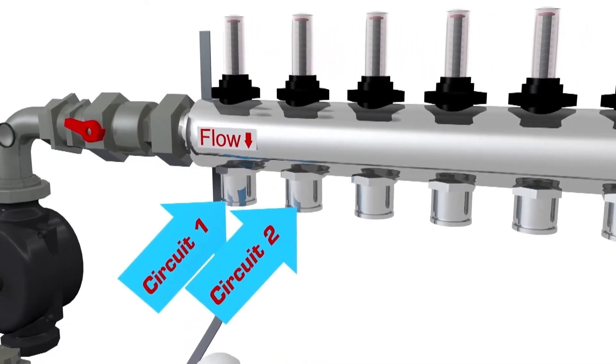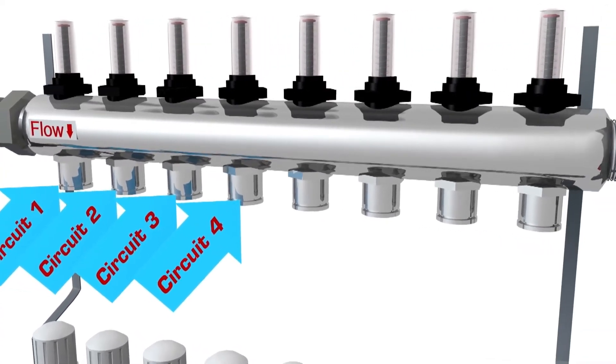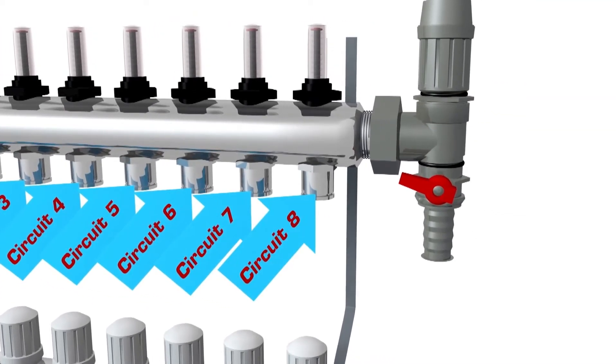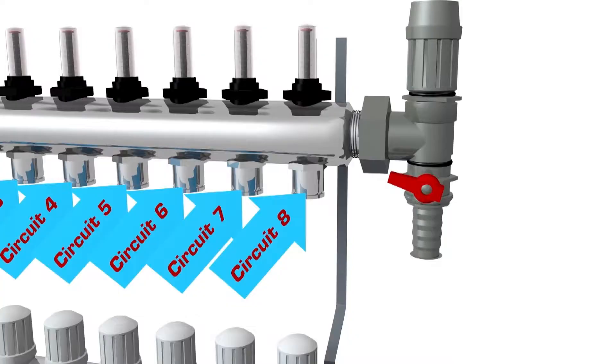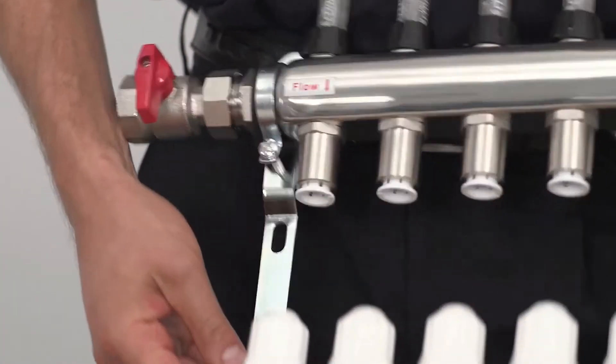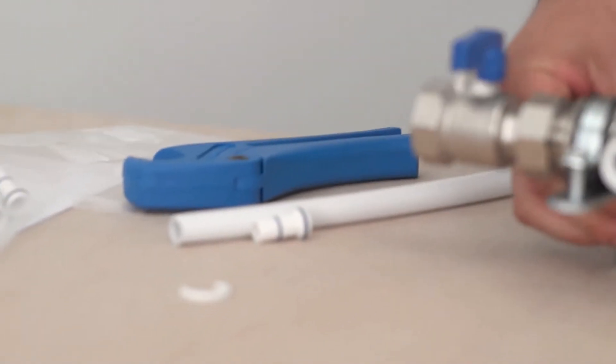The number of outlets on the manifold will be dictated by the number of circuits it's feeding. The JG manifold has our standard 15mm push fit connections for ease of use and enables the UK standard pipe size to be used.